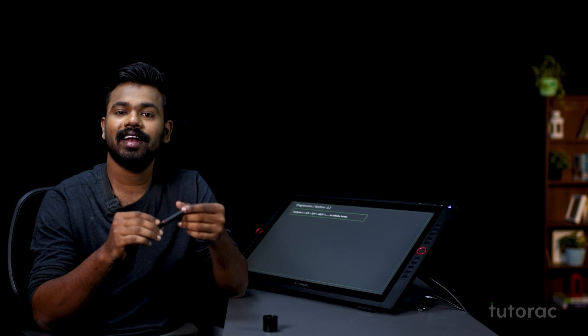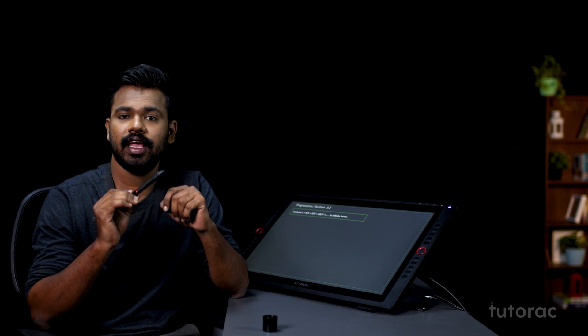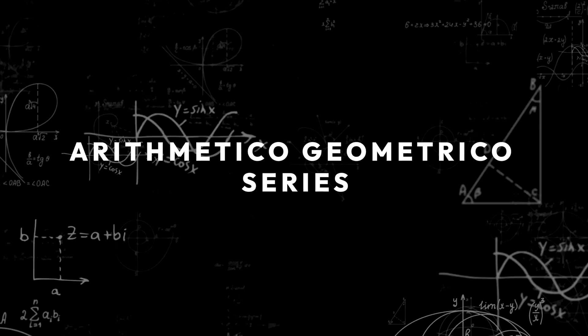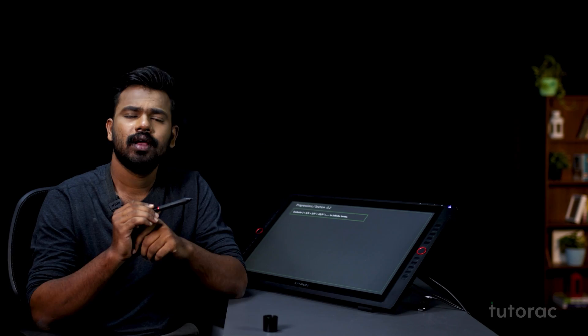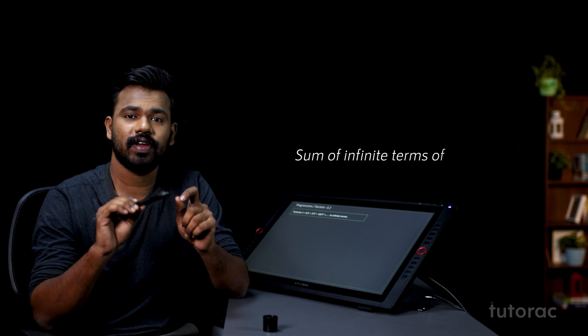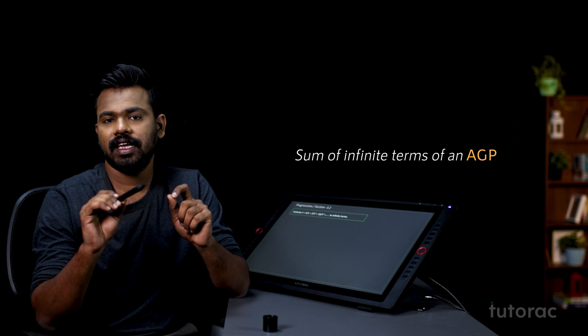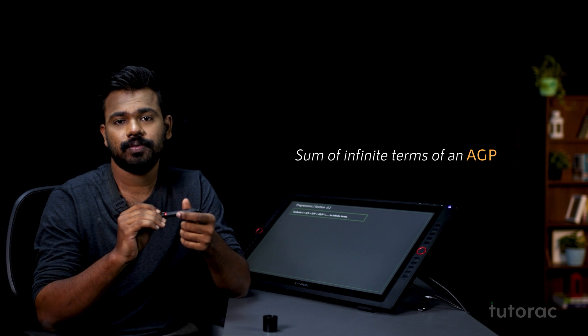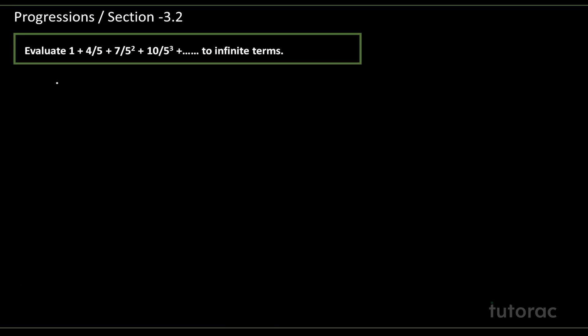We have studied what an AGP is — an arithmetico-geometric progression — and how to find a particular term in an AGP. Now we are going to do a question regarding the sum of infinite terms of an AGP: 1 + 4/5 + 7/5² + 10/5³ up to infinite terms.